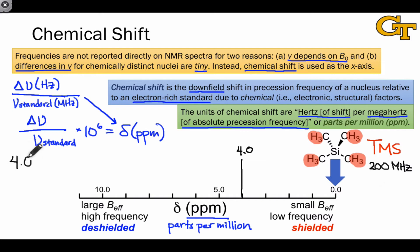If the chemical shift is 4.0 ppm and the standard frequency is 200 megahertz, this means the shift in precession frequency due to the chemical environment is 800 hertz. This drives home that the shifts in frequency are very small, on the order of hertz relative to the precession frequency.